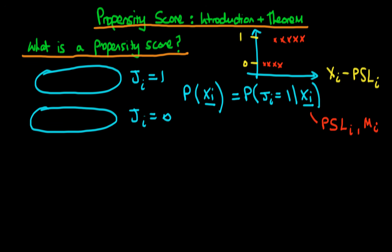What we could do in order to estimate the probability that an individual chooses to receive on-the-job training — so this y-axis here is Ji — is we could naively fit a linear probability model. But we know that this is problematic because it leads to values of the probability outside the range of 0 and 1. They could be both greater than 1 and less than 0, so that's not particularly sensible.